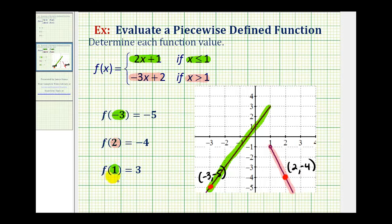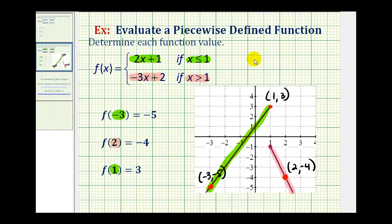And then for f of one equals three, notice there's a break in the graph at x equals one, but because this point is open and this point is closed, the function is defined at this point here. Notice the coordinates are one, comma, three. That's going to do it for this example. Thank you for watching.